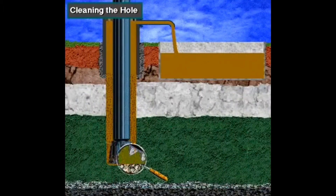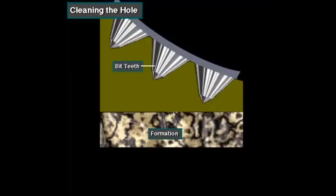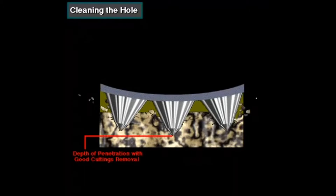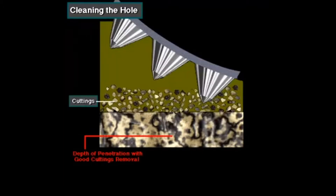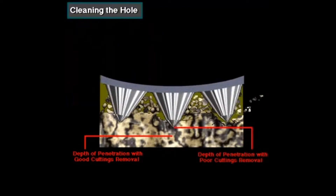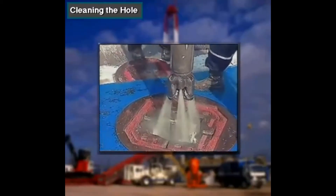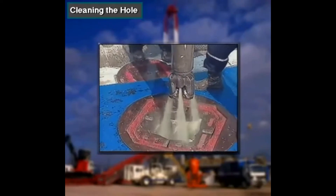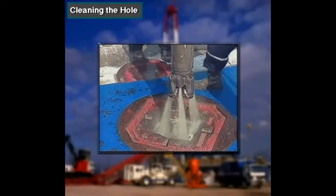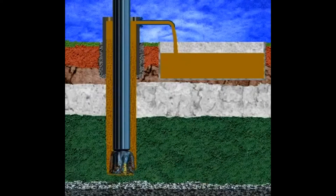One function of mud is to clean the hole. A clean hole allows the bit to drill into uncut formation rock. Mud jets out of the bit and moves cuttings away from the bottom of the hole, then carries the cuttings up the annulus and to the surface for disposal.